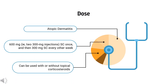How to use Dupilumab — Atopic Dermatitis: Indicated for moderate to severe atopic dermatitis not adequately controlled with topical prescription therapies, or when those therapies are not advisable. Initial dose: 600 mg (i.e., two 300 mg injections) subcutaneously once, then 300 mg subcutaneously every other week. Can be used with or without topical corticosteroids.